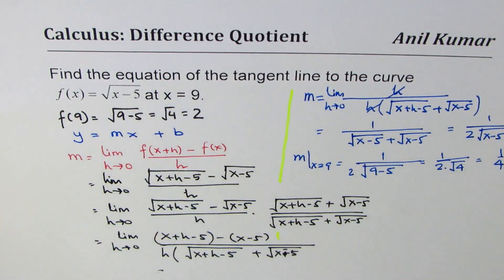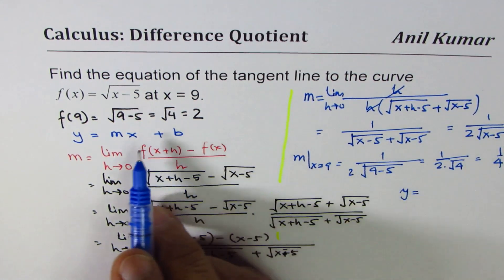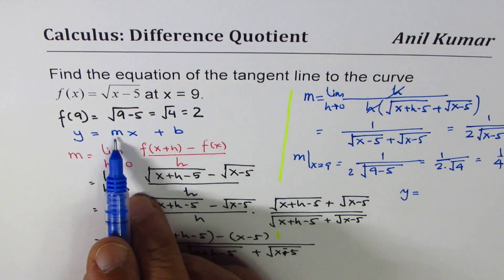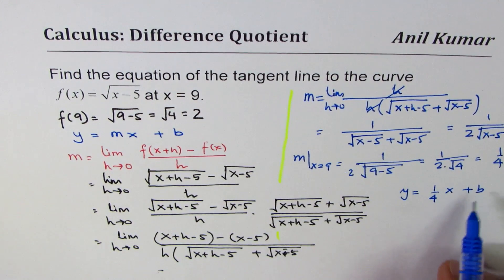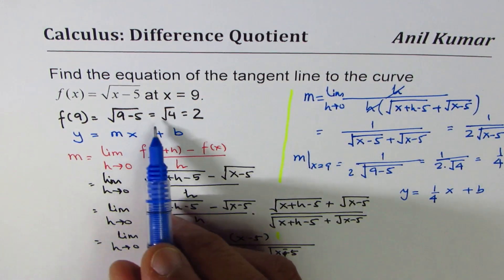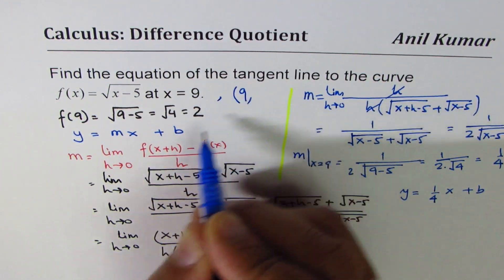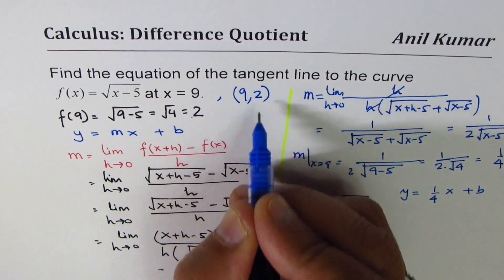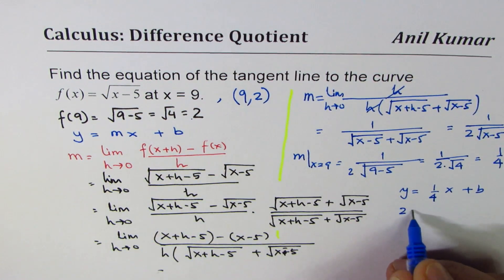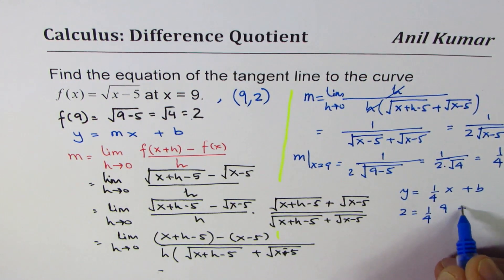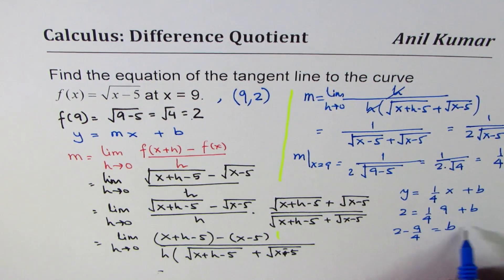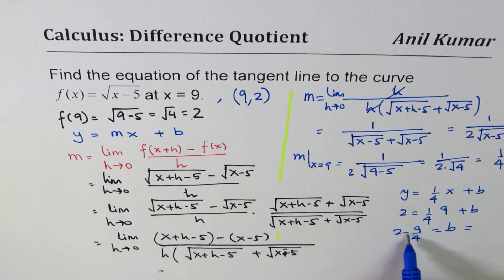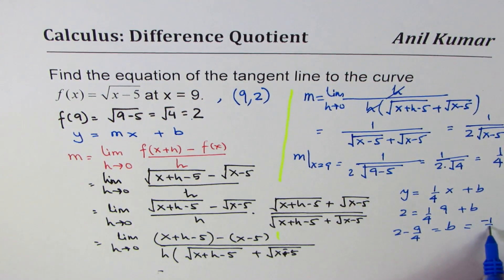Since we have to find equation of the tangent line, we can say y equals mx plus b, m is 1 over 4 x plus b. To find b, we can use the point, which is x value of 9, y is 2. So 2 equals 1 over 4 times 9 plus b. So which is 2 minus 9 over 4 equals b. So we have 8 minus 9 over 4 as minus 1 over 4.